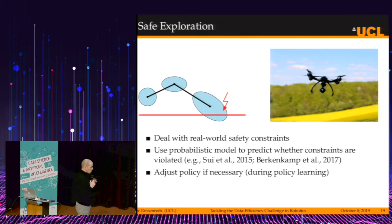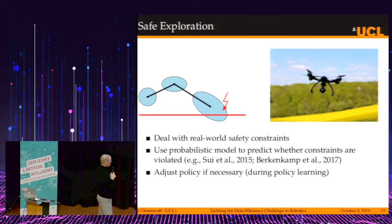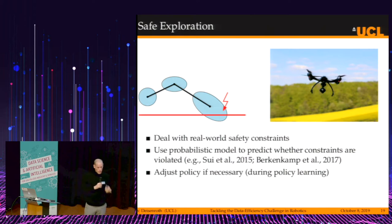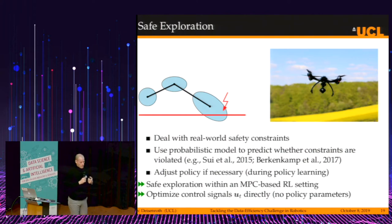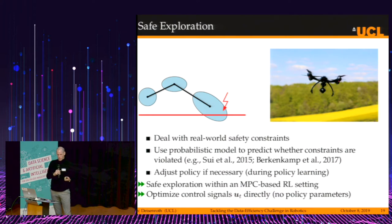The idea is to use these probabilistic models to predict whether constraints are violated and adjust the policy if necessary. We propose a method for safe exploration within a model predictive control reinforcement learning setting.